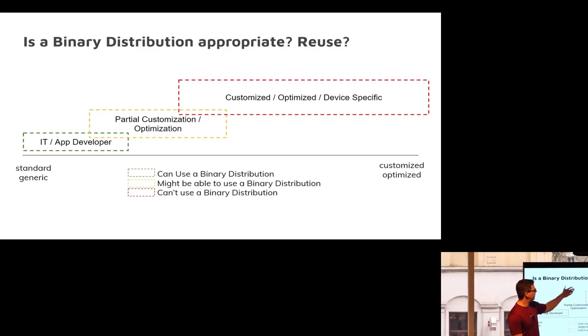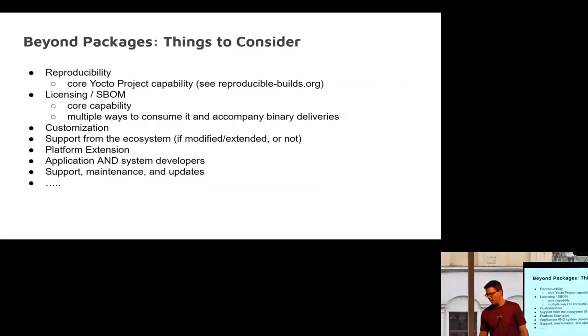This is another one to illustrate the same concept. If you're an IT or application developer, you probably can use a binary distribution because you don't care about the platform. If you need to do partial customization, optimize certain parts of the system, keep it compatible, depending on where you are in that yellowish square in the middle, you might be able to use a binary distribution. But if you are doing customized, optimized, or device-specific things, then it's not for you. You can do your own binary distribution, but it's just your own at that point.